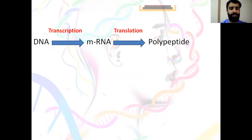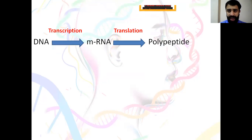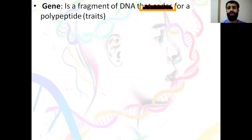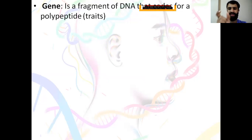We have to remember that DNA, through the process of transcription, will give mRNA, and the mRNA through the process of translation will give polypeptide. You have to know what a gene is. A gene is a fragment, or a piece, or a portion of the DNA that codes for a specific polypeptide or for a specific trait.